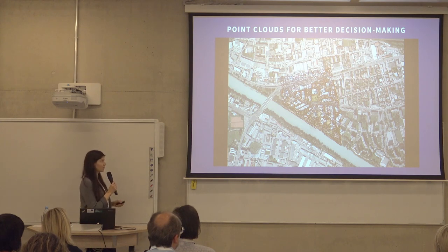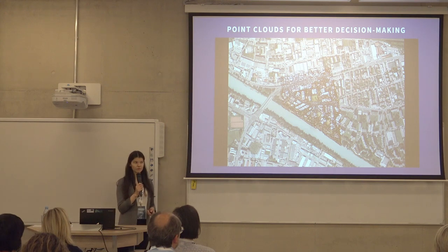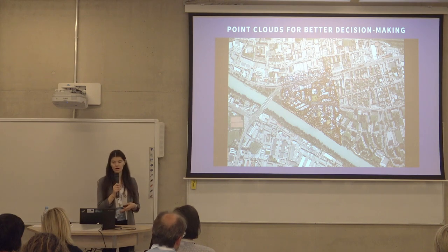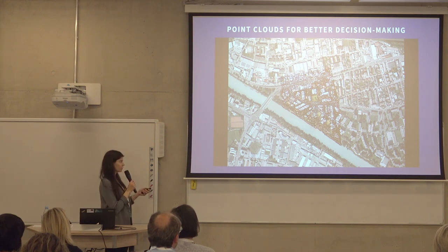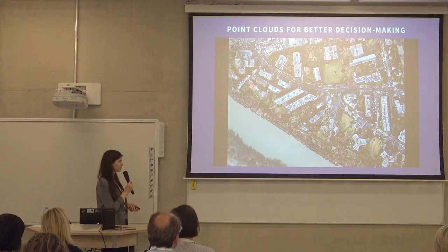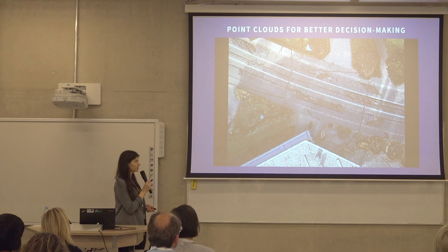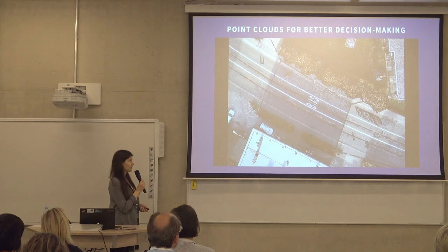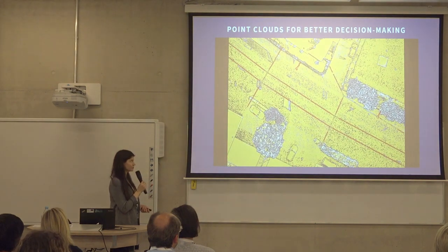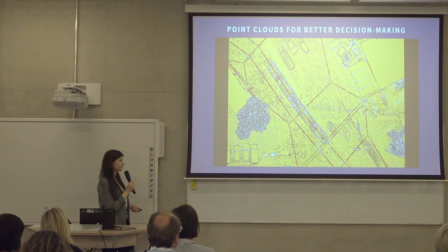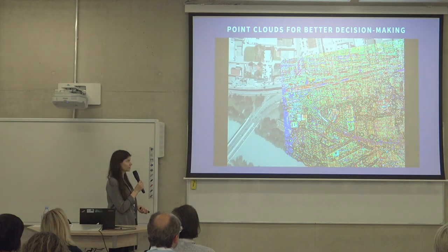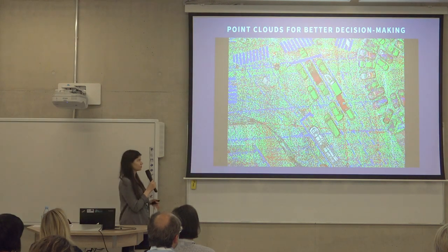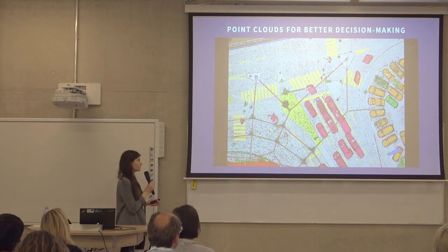In this example I wanted to show how different attributes can be used for classification, and later to go further with modeling. Some scanner systems allow assigning RGB color to the point cloud. Dimension can also be computed — linear and planar features. Echo return information is written into the point cloud, as well as distance information. Quite many things can be used for classification.